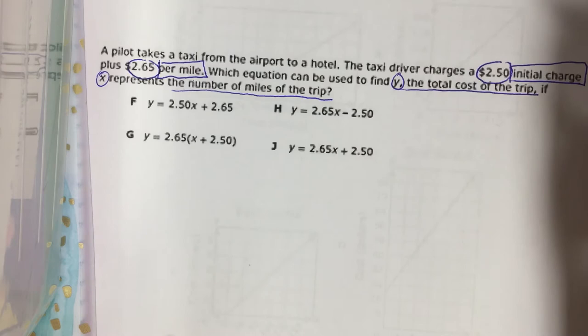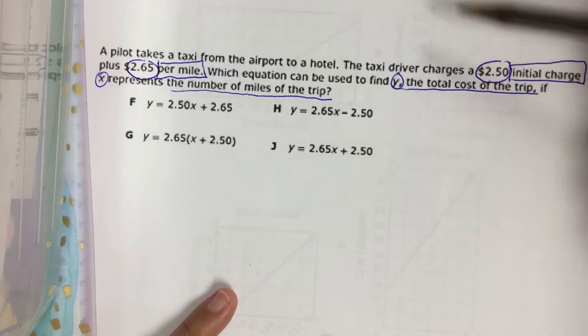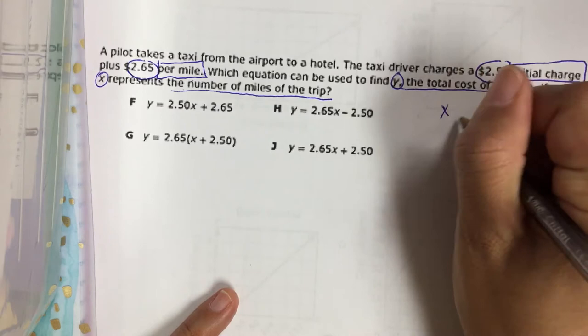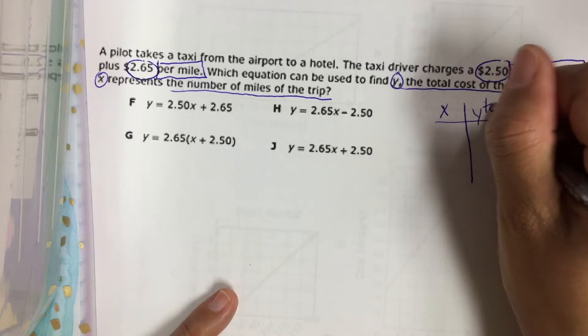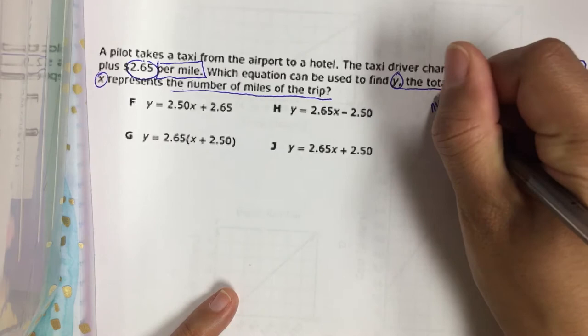I'm going to create a table here. So they're telling me what my y values and my x values represent. Y is the total cost and x is the number of miles.